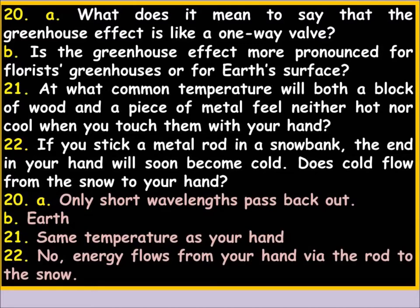What does it mean to say that the greenhouse effect is like a one-way valve? Kind of like Hotel California — you can check in any time but you can't leave. Visible light comes in with short waves; infrared has longer waves and can't get out. The atmosphere is transparent to short waves but not transparent to long waves.